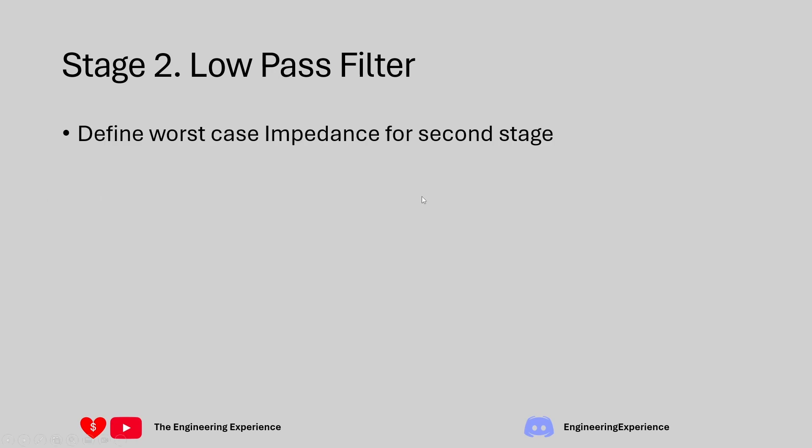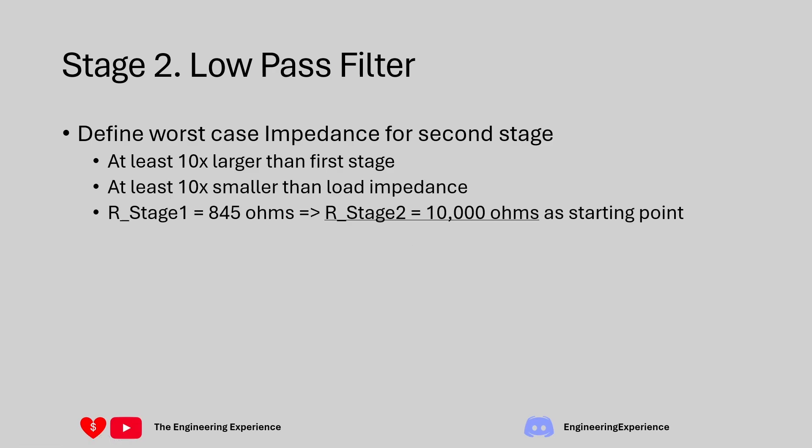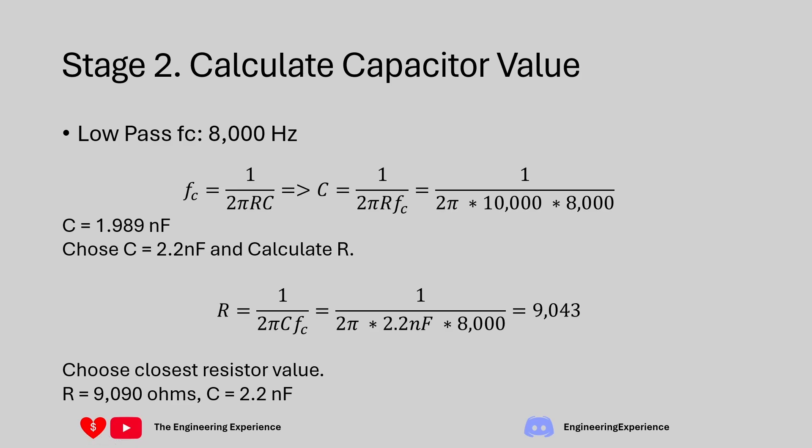We know our worst case impedance from our first stage is 1 kΩ. We want the resistor value in this case to be at least 10 times the value of the resistor in the first stage. We had a resistor of 845 Ω, so in this stage we'll define the resistor as 10,000 Ω as a starting point. Going through the same calculations and plugging in these numbers with fc of 8,000 Hz, that gives us a capacitance value of 1.989 nF.